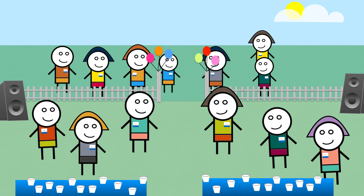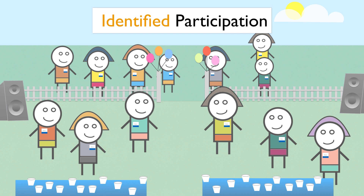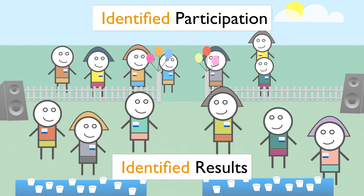These surveys require the most security work behind the scenes, but they give you the most accurate information about who is responding because each participant and response is identified to be a very specific individual. This means that you can build a richer data set and have the option to do follow-up interviews or questionnaires with these people over time. However, since you know exactly who's responding and what they said, this kind of survey requires the most effort into making sure that the data is kept secure.